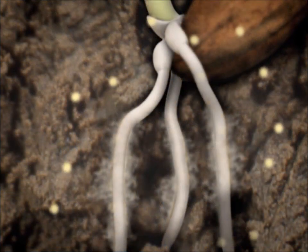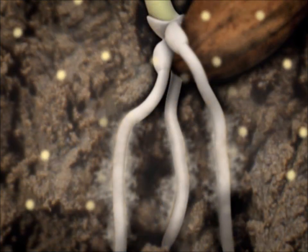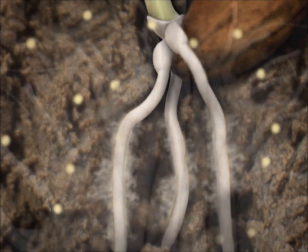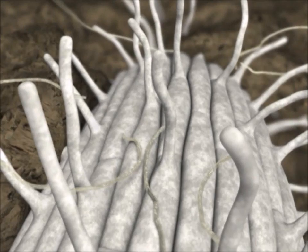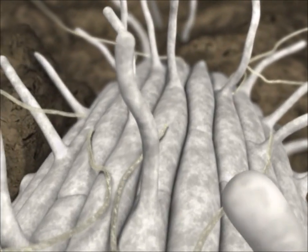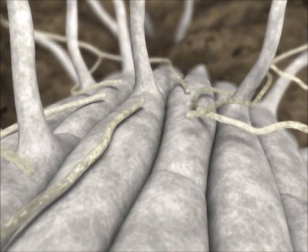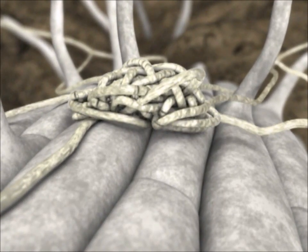The hyphae are attracted by chemical stimulants released from the roots of young host plants. Colonization of the root surface begins with long, sparsely branched hyphae called runner hyphae. These aggregate, forming a dense cushion.